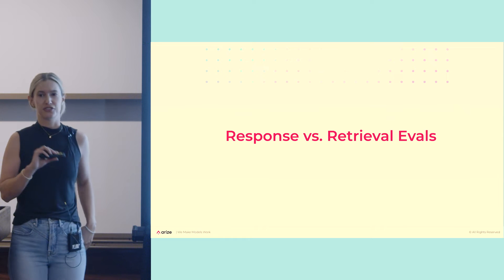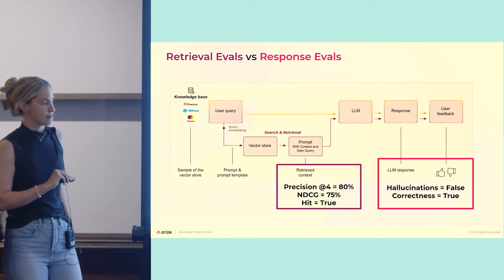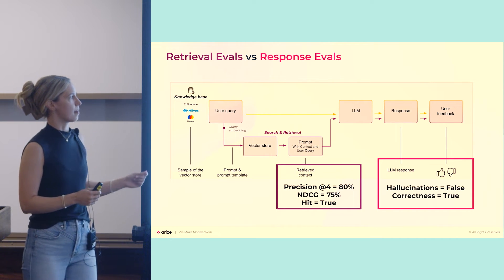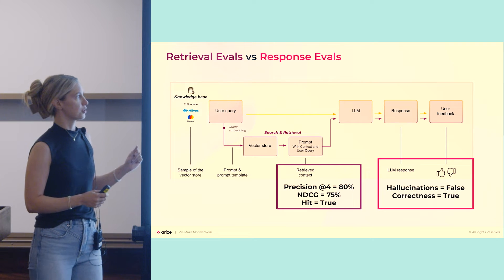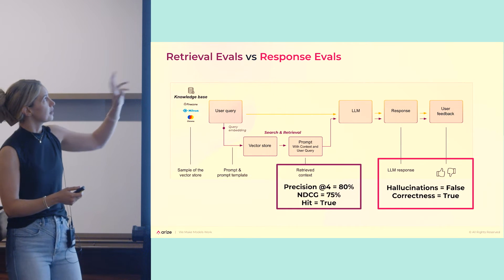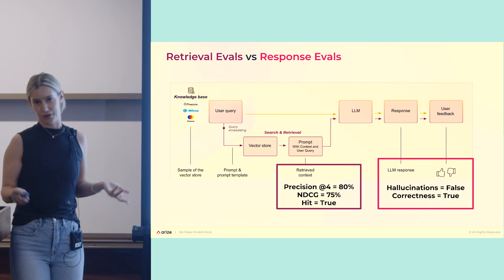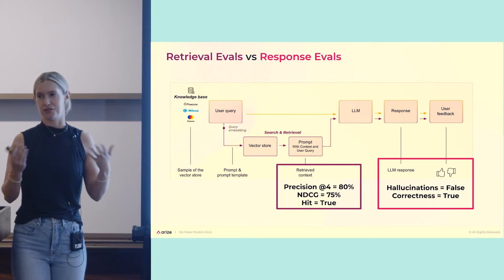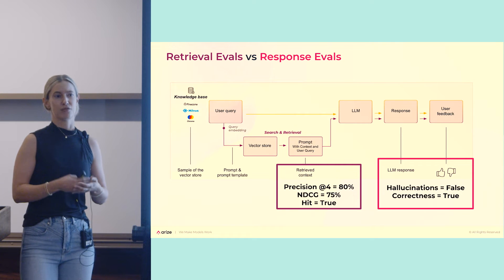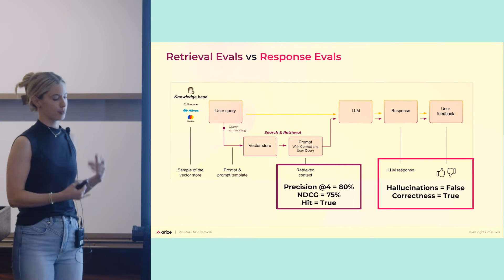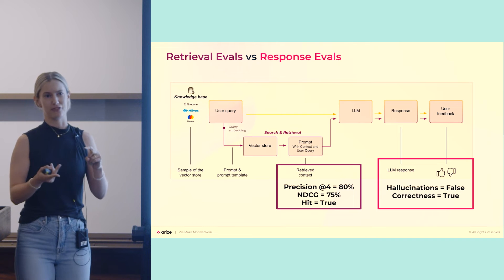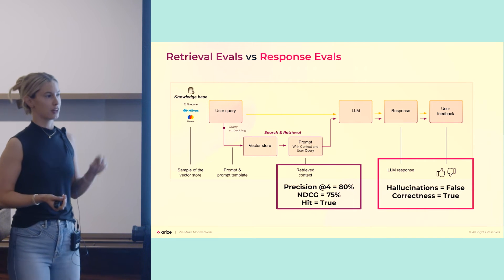LLM system evals are for once you've decided which large language model you're going to use — then you think about the systems aspect. This is where you start iterating: doing prompt engineering, storing prompt templates, and evaluating that next phase. The next step is response versus retrieval evaluations. Going back to the RAG pipeline — you have your user query, your vector stores, and then your large language model. Response evals include hallucinations, correctness, and toxicity. Retrieval evals use more traditional ranking and recommendation metrics — precision, NDCG, hit rates. If you've built recommendation systems or search and retrieval models before, you're familiar with these.